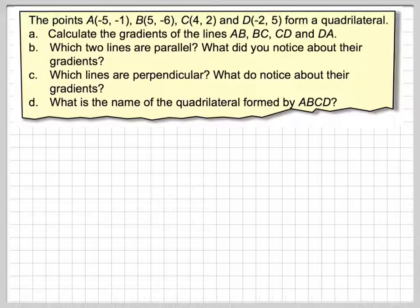So a quadrilateral is a four-sided shape. Calculate the gradients of the lines AB, BC, CD, and DA.